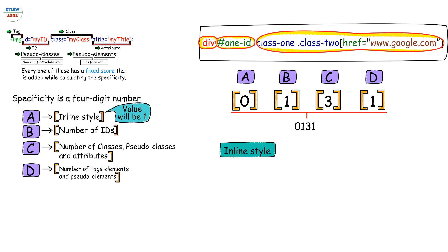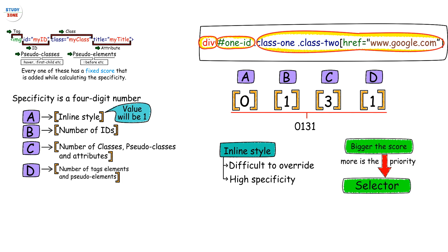If there is an inline style, it will not be easily possible for you to overwrite it using external or internal CSS files because of its high specificity. Bigger the score, more is the priority of a selector. It does not matter where the occurrence of an ID or a class is in the selector.